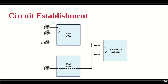For connection establishment: if two subscribers are connected to the same end office, a direct loop-type connection is made. If one subscriber is connected to one end office and another is connected to a different switching node, then through intermediate exchange nodes and trunks we establish the connection. The dotted line in the diagram represents the active connection inside the switching node — the switch is closed between specific ports.